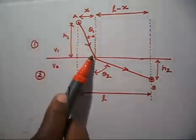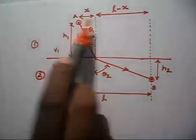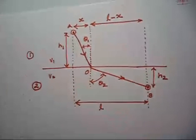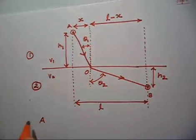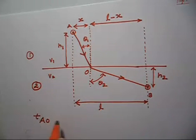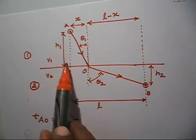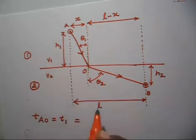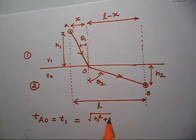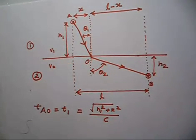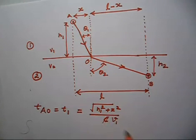In medium 1, the distance traveled from A to O is √(H1² + X²). So the time T1 required to travel from A to O is √(H1² + X²) divided by V1, since the velocity in this medium is V1, not c.